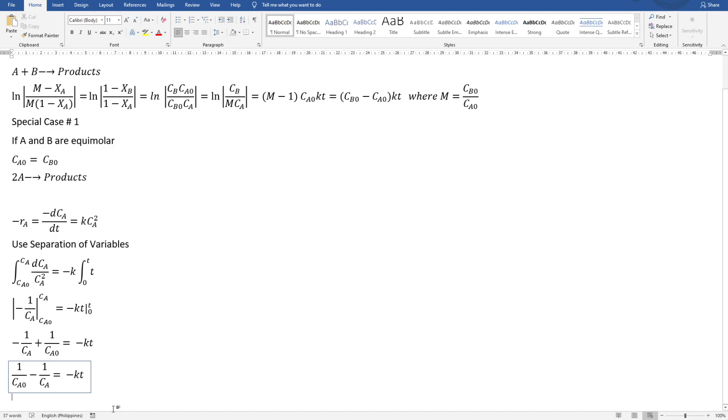If you remember in your V-CAM, for a second order in the kinetics part, second order: 1 over CAO minus 1 over CA equals kt.